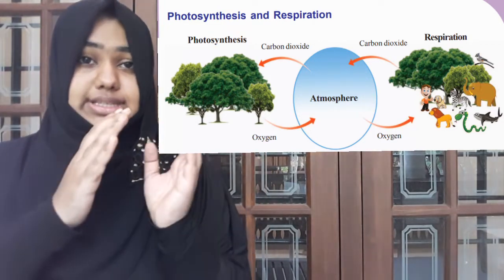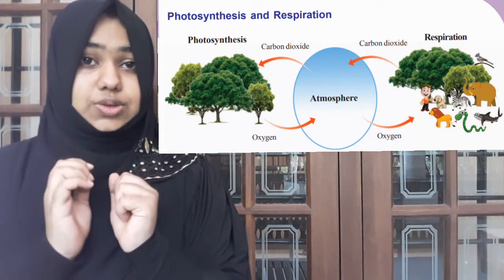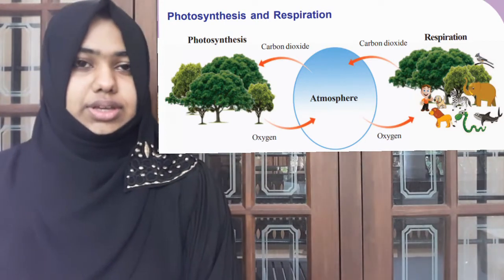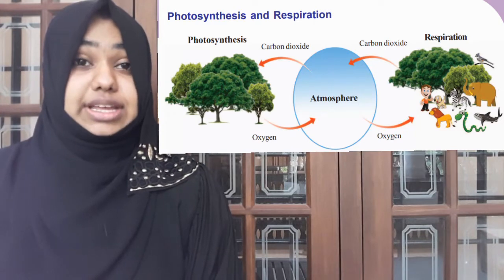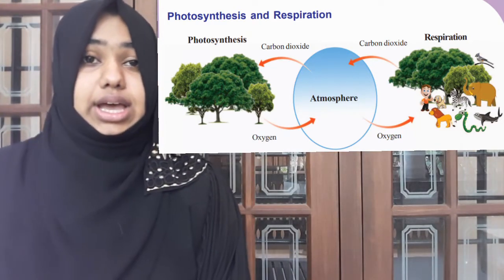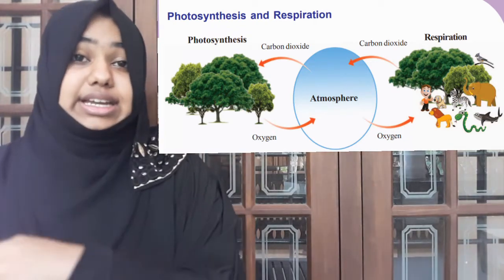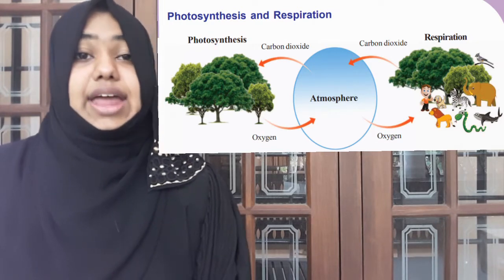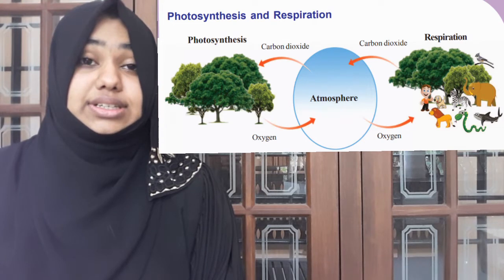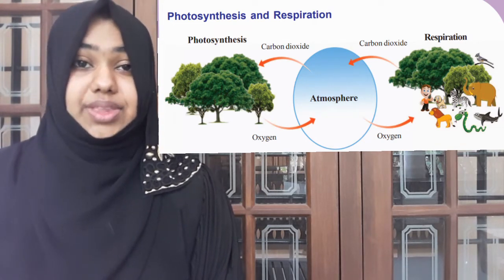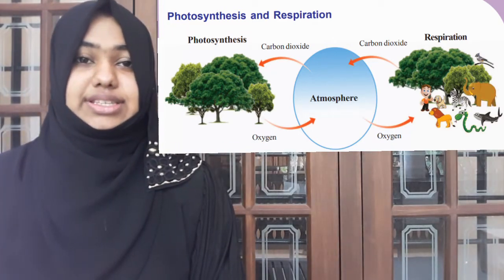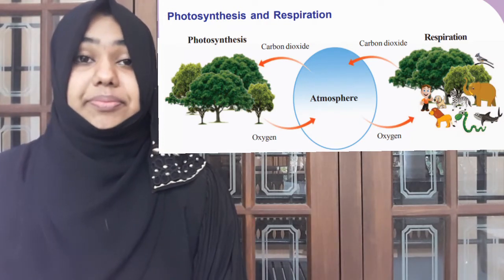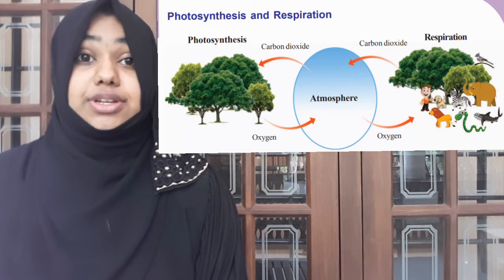Plants and trees are included on both sides. There are some red arrows saying that from the atmosphere — the air around us — carbon dioxide is taken in by the plants for photosynthesis. And what does the plant give out during photosynthesis? It gives out oxygen. Then, carbon dioxide is released by humans, plants, and animals, and oxygen is taken from the atmosphere for the process of respiration.